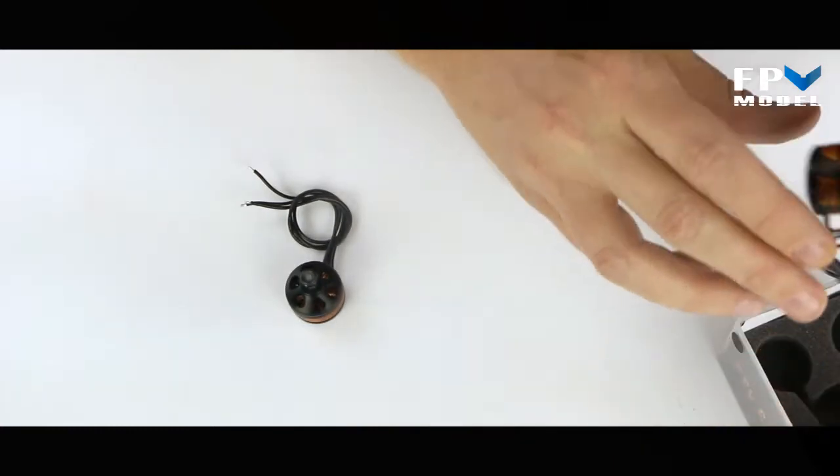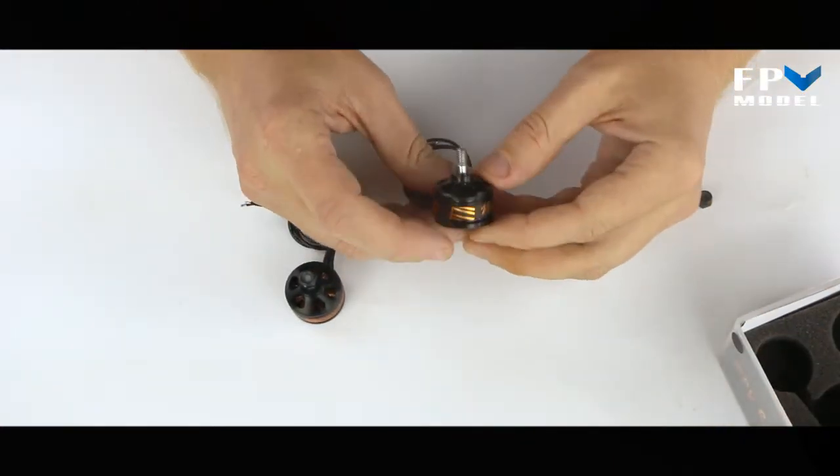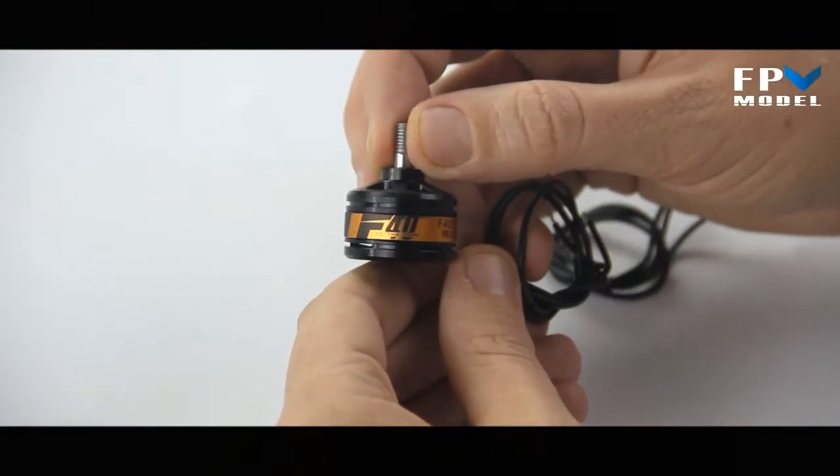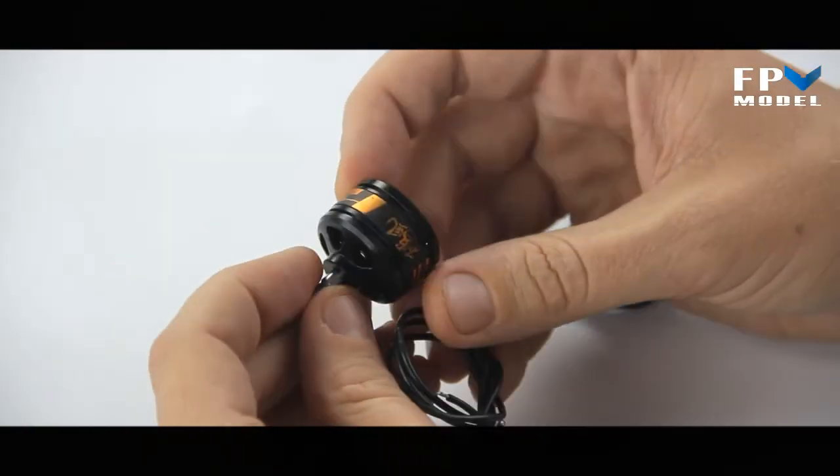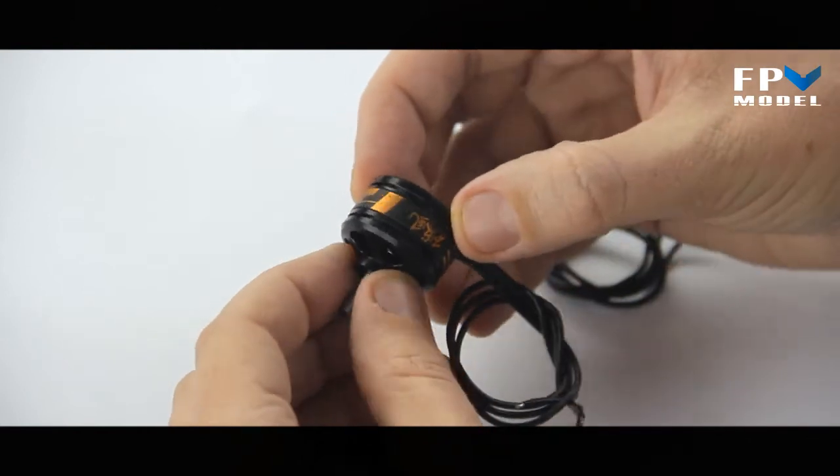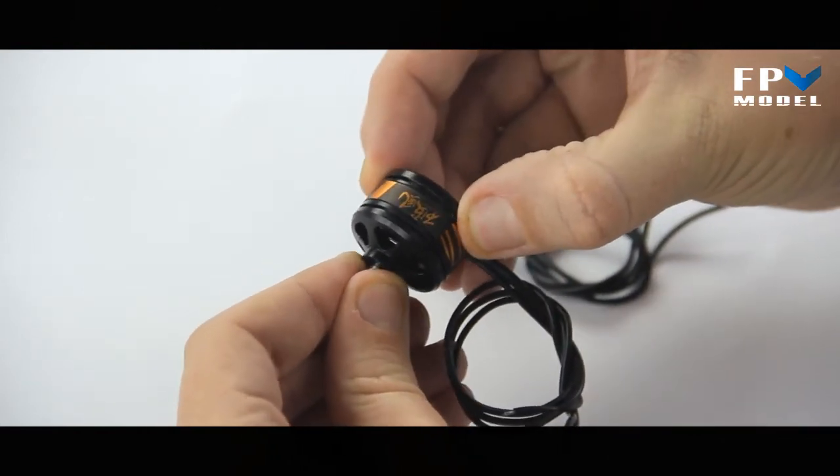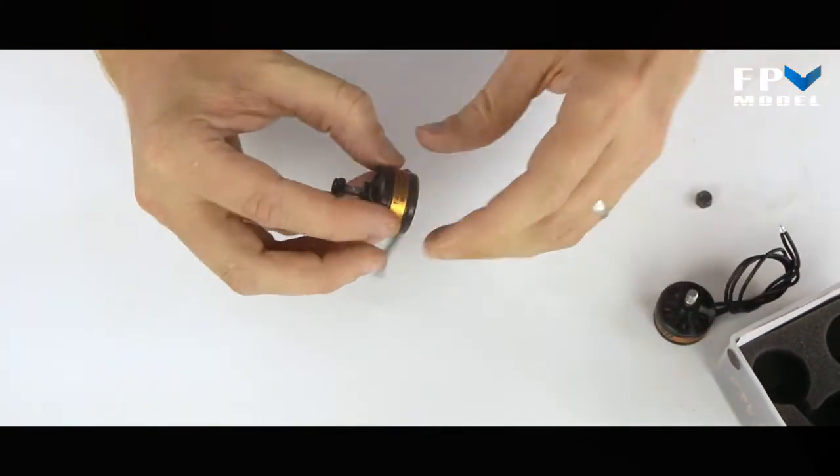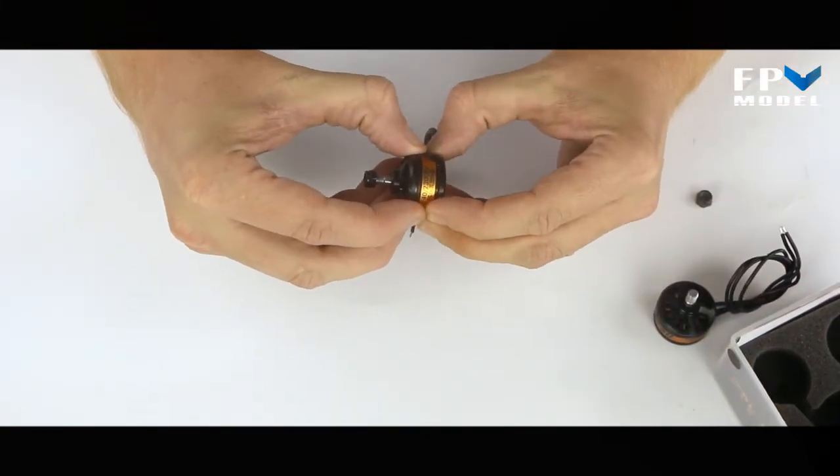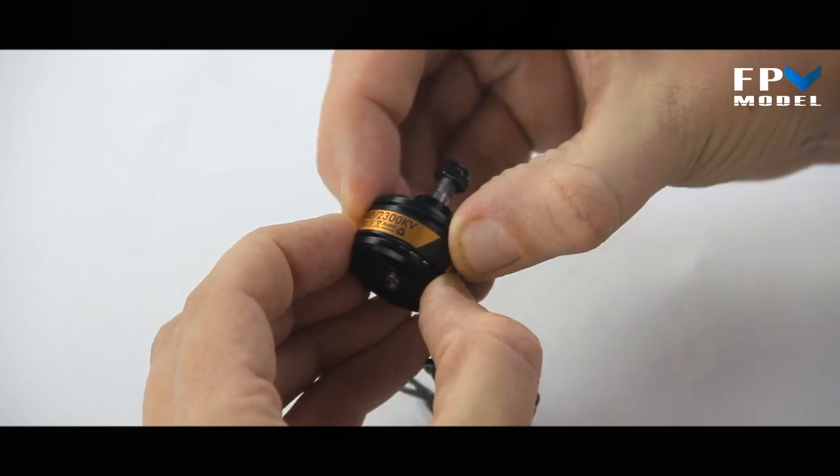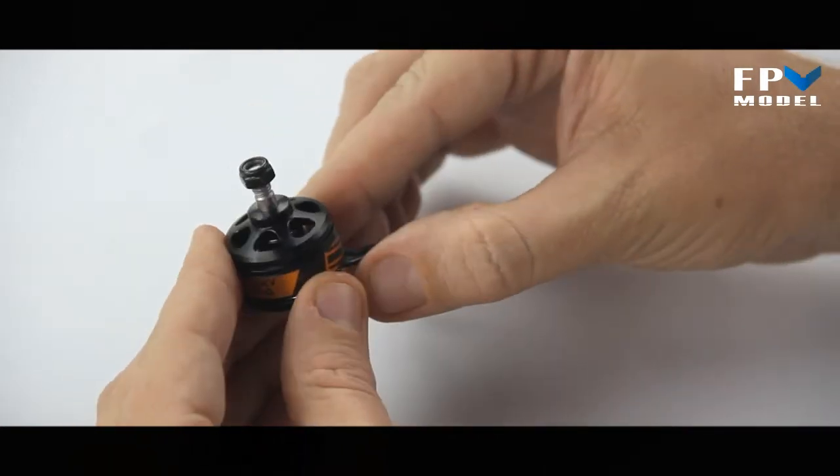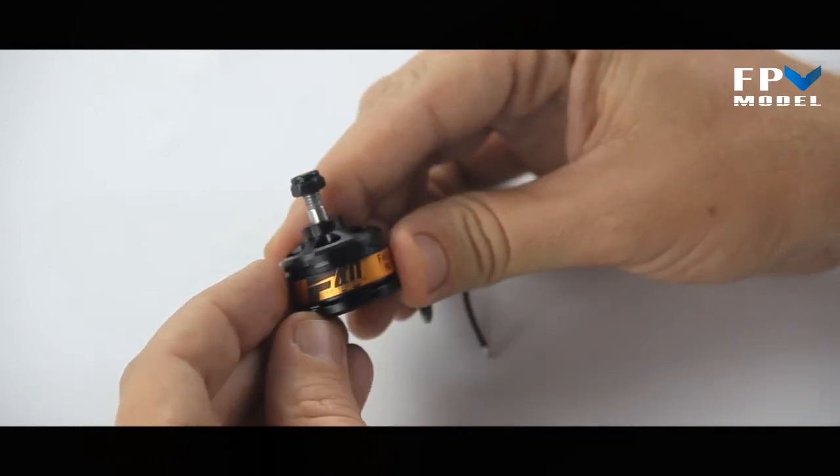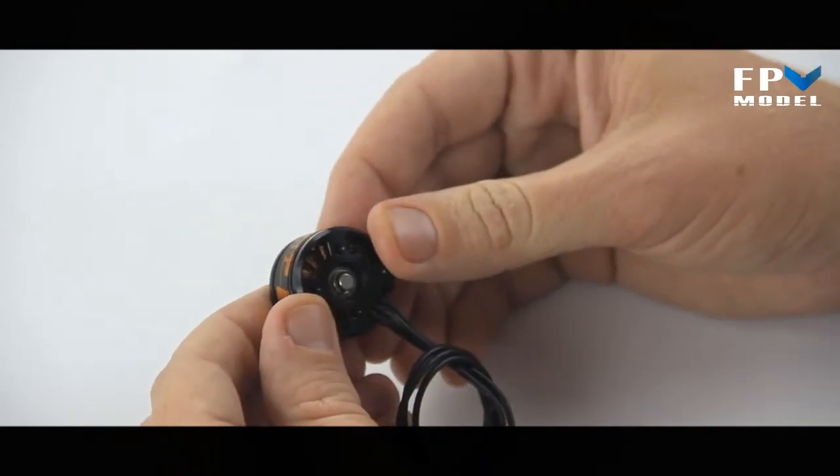So let's go ahead and take a look at the motor itself. As you can see, it's just a black motor with gold labeling. And in typical T-Motor fashion, there is no play at all between the base and the bell of this motor here. So these are going to stay true to T-Motor form and be a pretty good quality motor.